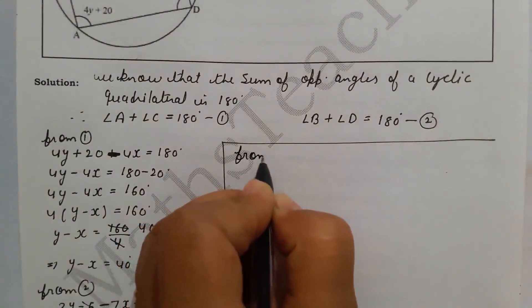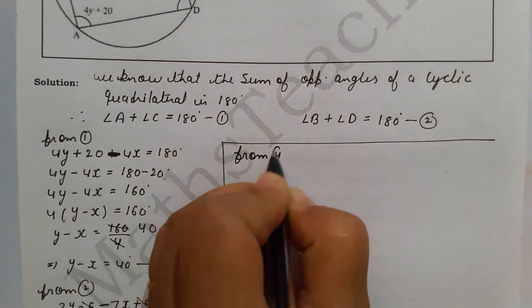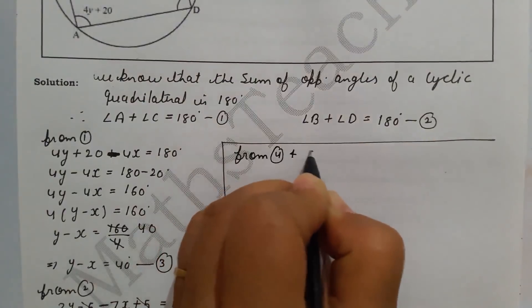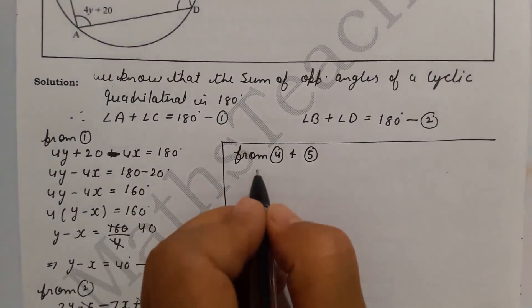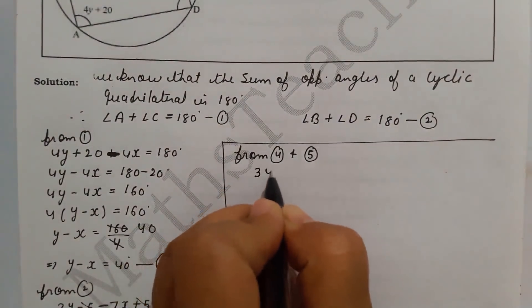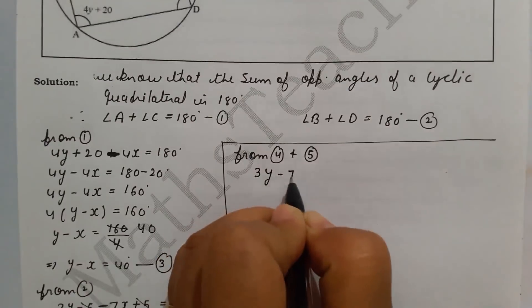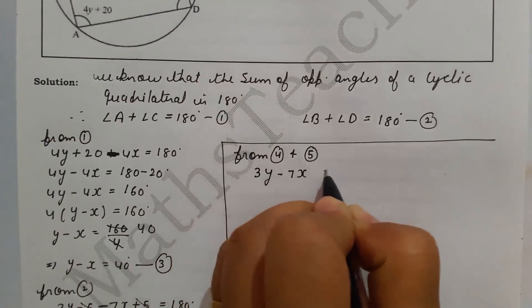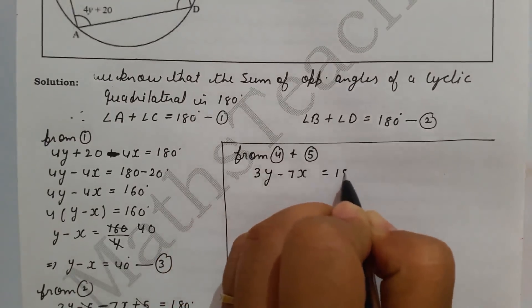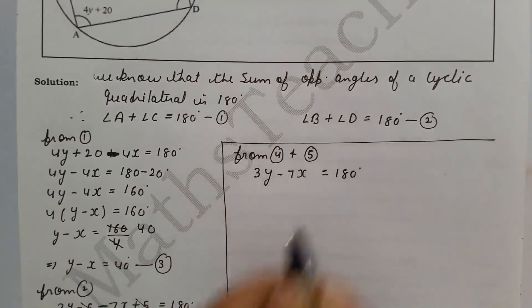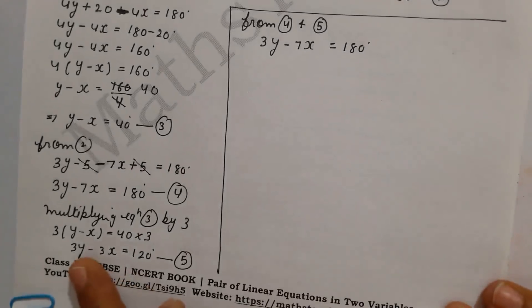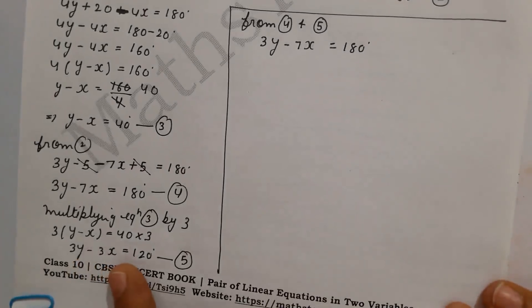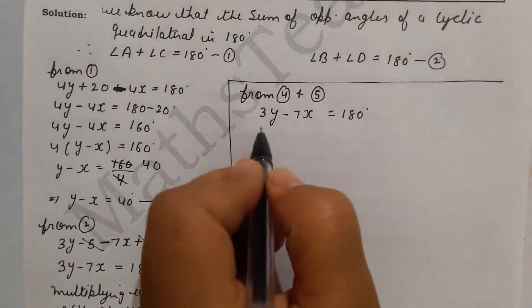So from equation 4 and equation 5: equation 4 is 3y minus 7x equals 180°, and equation 5 is 3y minus 3x equals 120°.